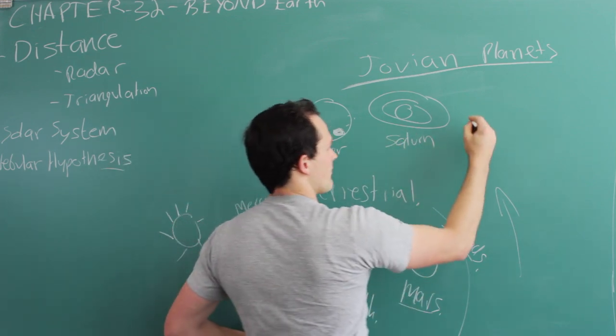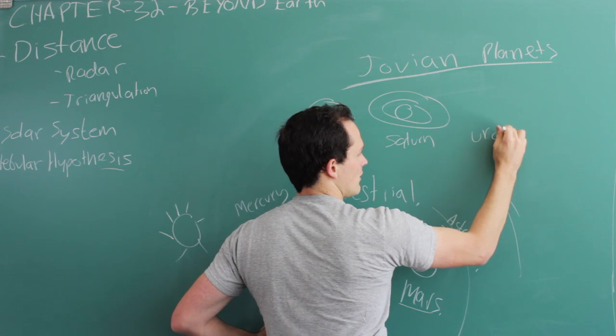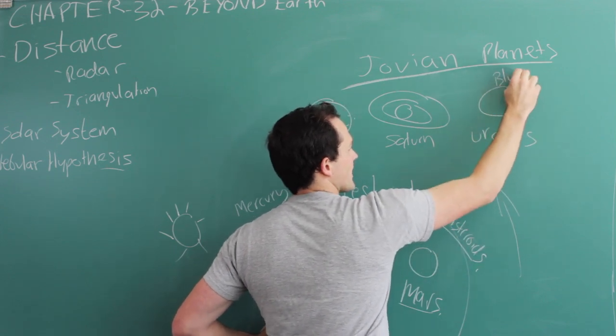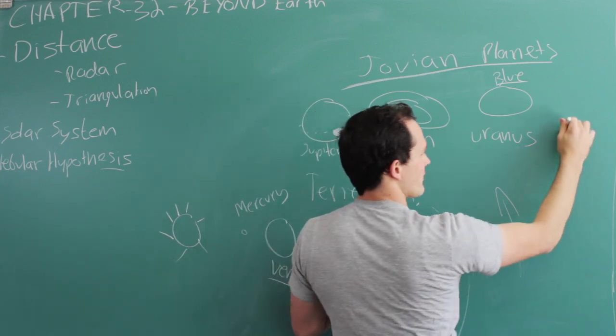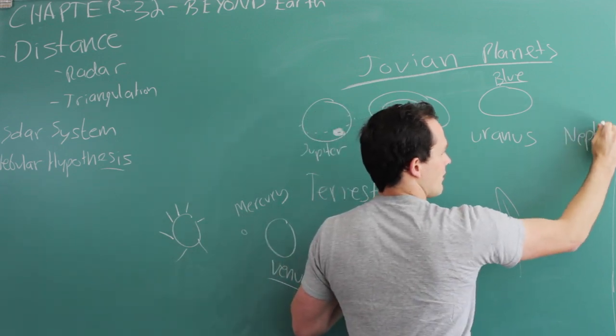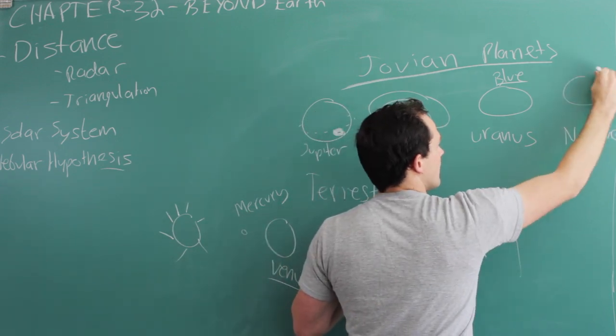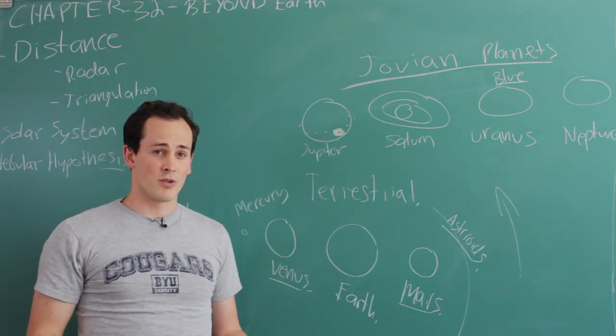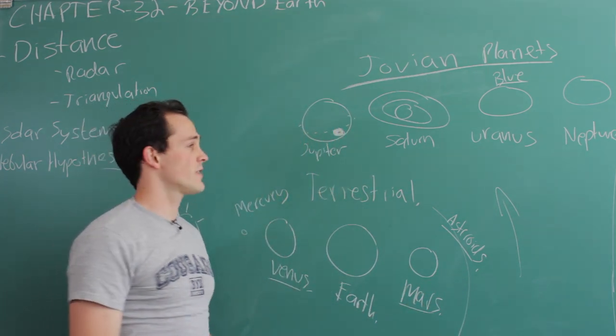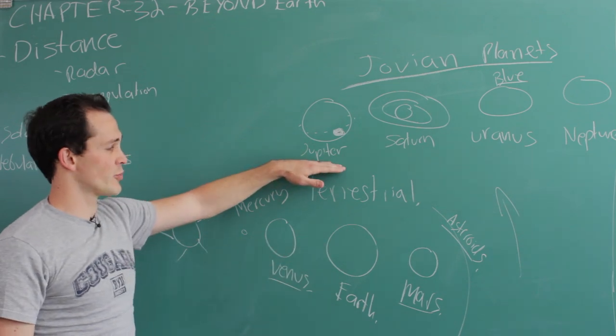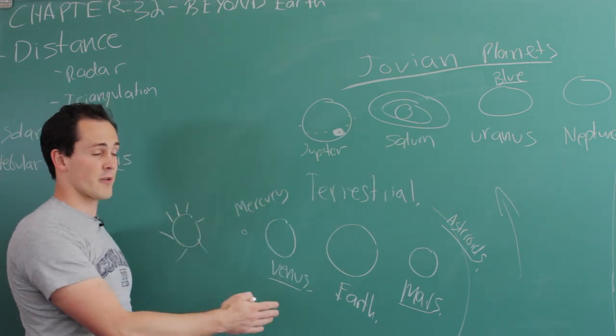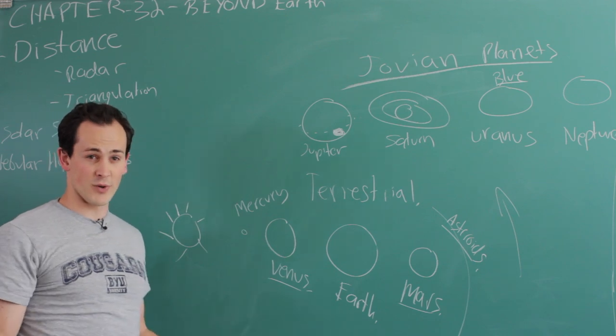Farther out from Saturn, we have Uranus, which is a blue planet that is flipped on its side. And farther out from that, Neptune, a much deeper blue planet. These icy worlds are called the Jovian planets. Jovian is an old name for Jupiter. We're going to talk in a few minutes about where these planets actually came from.